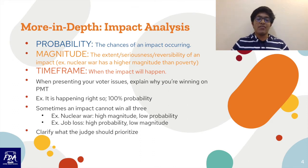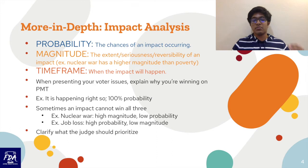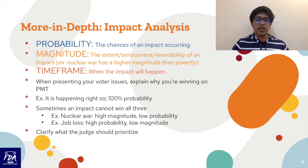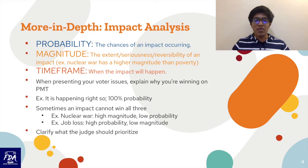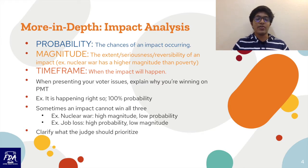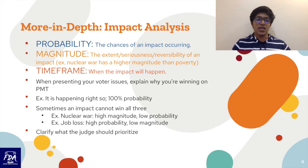Often an impact cannot have all three, so you have to pick. For example, nuclear war has a high magnitude because it could kill every single person on the planet, but a low probability because it's very unlikely that countries will actually use their nuclear weapons. Job loss, on the other hand, has a high probability but a low magnitude — it happens in the status quo but might not affect a huge number of people at the same time the way nuclear war could. You should clarify what the judge should prioritize based on which impact you have, and a good debater will always make their impact the one that's prioritized over their opponent's.